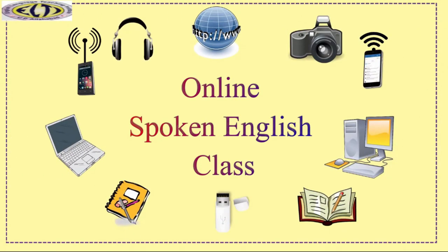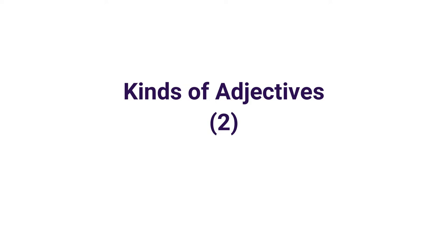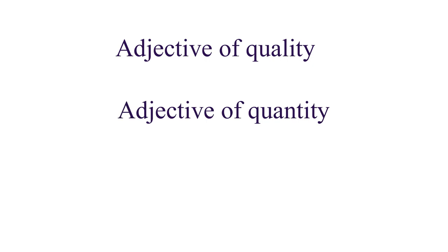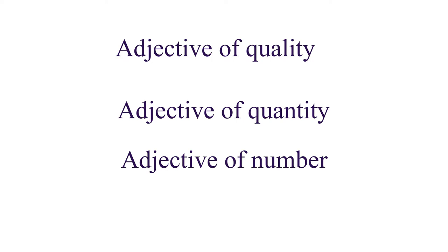Hello teachers, this session is the second part of kinds of adjectives. Let's have a quick recap. In the previous class we studied about adjective of quality, which tells the quality of a person or thing; adjective of quantity, which tells the quantity of a thing; and adjective of number, which tells about the number or gives an answer to how many.